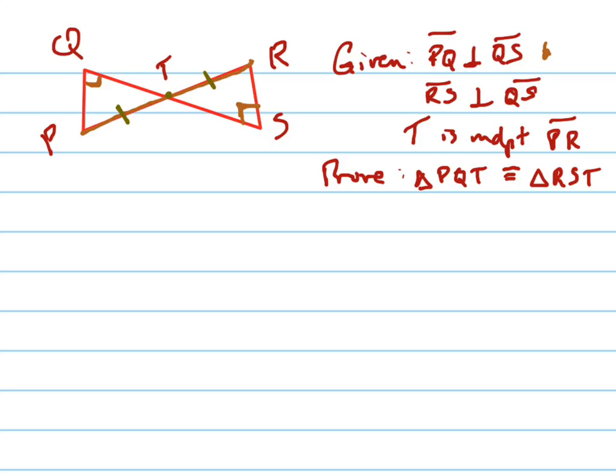So, I know that PT is going to be congruent to TR by the definition of midpoint, that's one of my things that I'm going to show. And the other thing that I need then is either another angle or another side, and I can see an angle that I have is this angle right here, and this angle right here are congruent to each other because they're called vertical angles. So that's my plan of attack, now let's write it out.